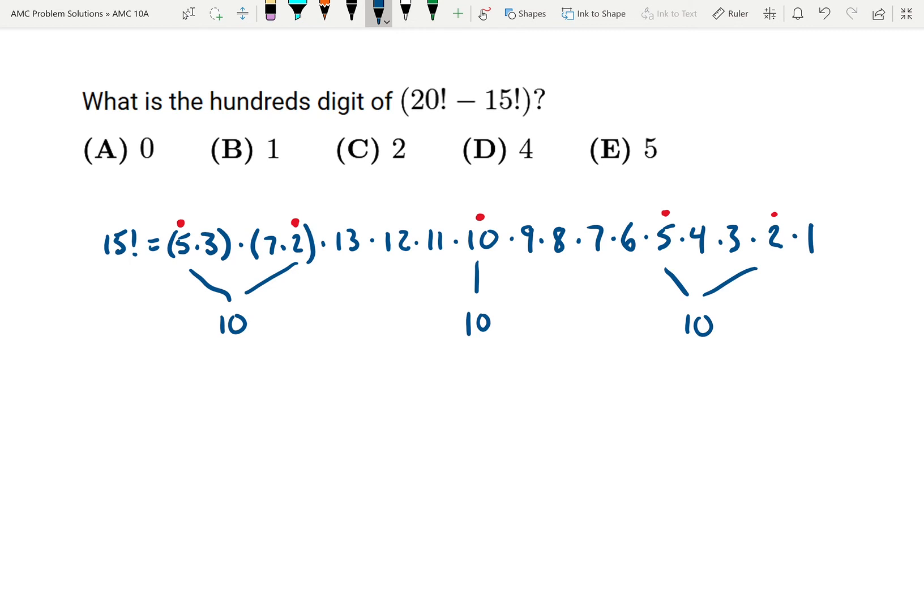Inside this 15 factorial exists 10 times 10 times 10, which is 1000. So actually I now know that 15 factorial is divisible by a thousand. And since 15 factorial is a part of 20 factorial, 20 factorial is also divisible by a thousand.